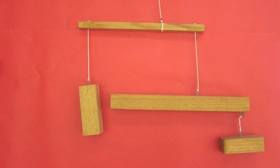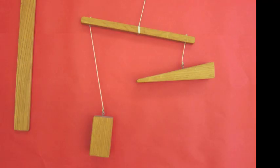One last thing to consider when putting a mobile together is to adjust the length and the height of the bars and blocks so that they're free to turn and don't bump into each other.